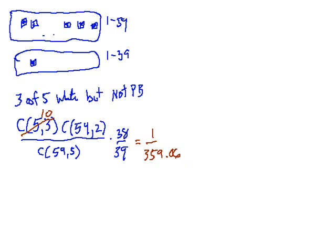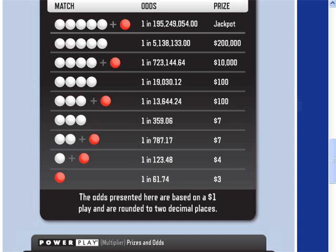Well, let's see what the website said. So we did the 1, 3 winners, no Powerball. The odds were 1 in 359.06. Okay, now let's see if we can do the other one here.